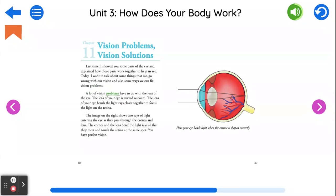A lot of vision problems have to do with the lens of the eye. The lens of your eye is curved outward. The lens of your eye bends the light rays closer together to focus the light on the retina. The image on the right shows two rays of light entering the eye as they pass through the cornea and lens. The cornea and the lens bend the light rays so that they meet and touch the retina at the same spot.